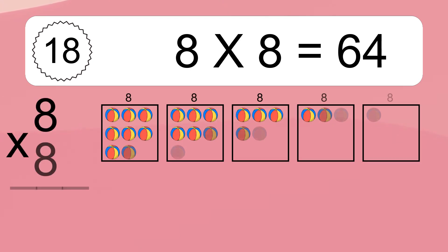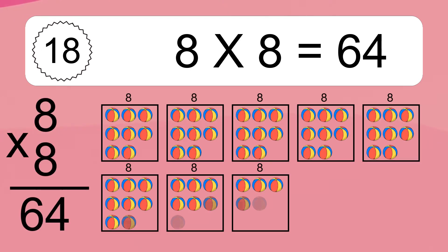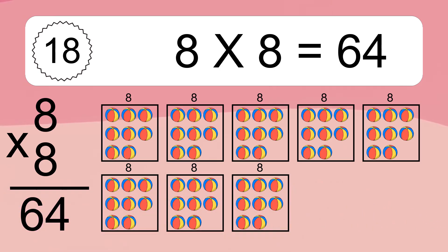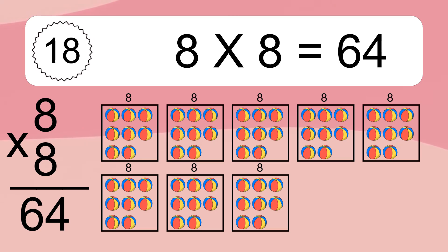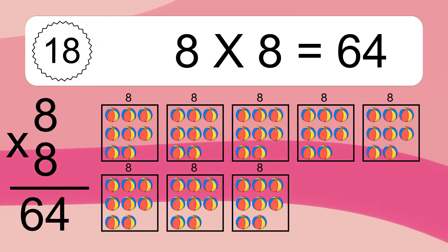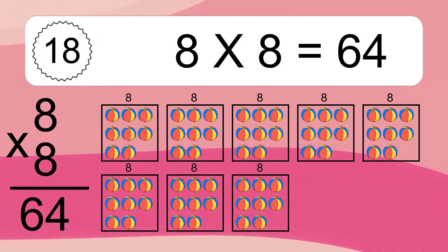8 times 8 equals 64. We have 8 boxes, and each box has 8 colorful balls inside. If you count all the balls in all the boxes together, you will have 8 times 8 balls. This equals 64 balls.